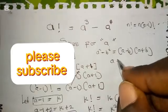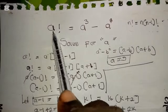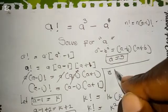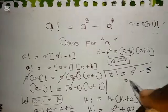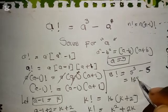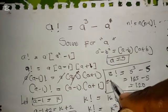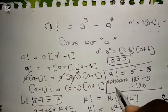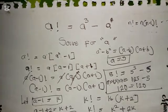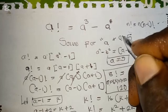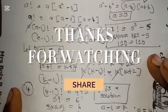Let's verify our answer. When a equals five: 5! should equal 5³ minus 5. Five cubed is 125, and 125 minus 5 equals 120. And 5 factorial equals 5 times 4 times 3 times 2 times 1 equals 120. Both sides equal 120, confirming a equals five is correct.